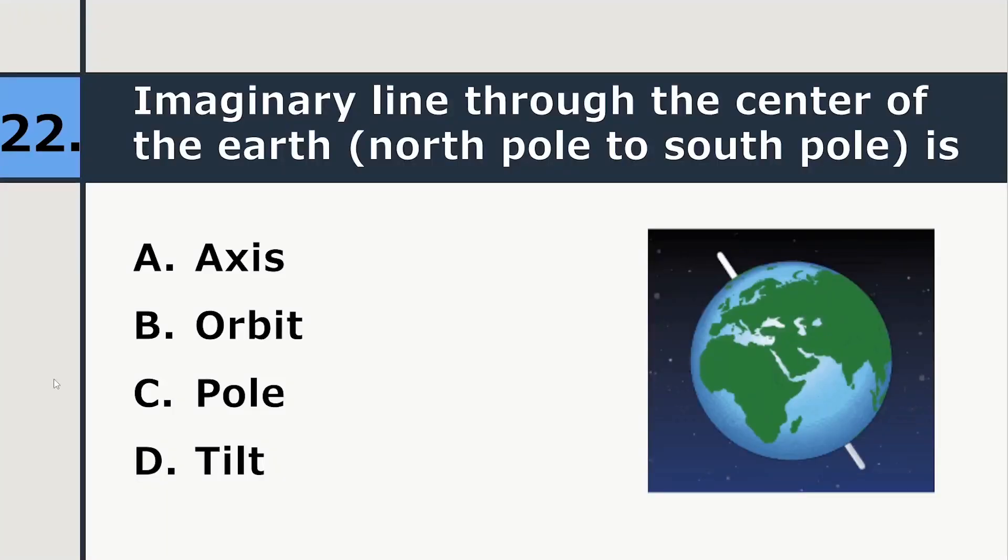Line through the center of Earth, North Pole to South Pole is axis, orbit, pole or tilt. So correct answer is axis.